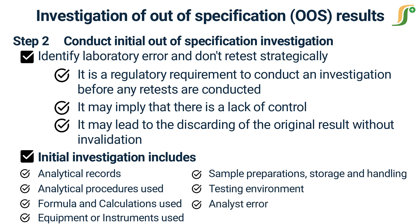If some of the initial investigational areas look like the assignable causes in step 1, that's correct — the objective of an initial investigation is to ascertain if an assignable cause is readily apparent which might be attributed to the out-of-specification result. In that case, when an assignable cause is found without a doubt, declare the original out-of-specification result as invalid and repeat the test to replace the invalidated result.